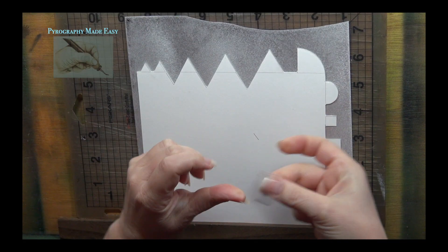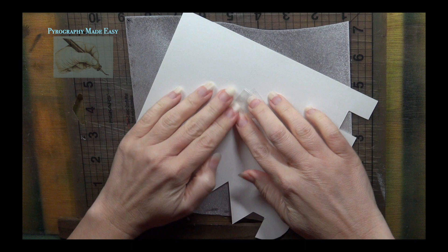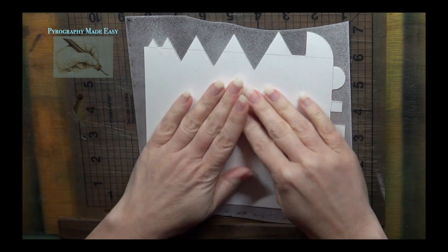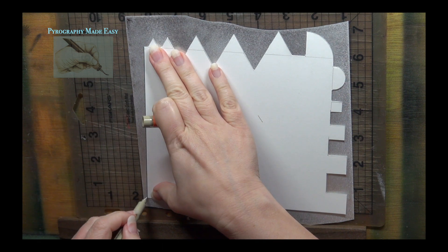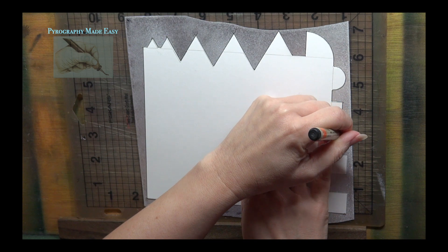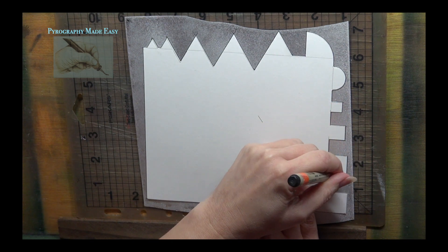I made a loop with tape and placed that on the paper. Then I flipped the paper over and pressed it to the metal sheet. This kept the design in place as I traced around it. For the tracing I'm using a fine tip permanent black marker.